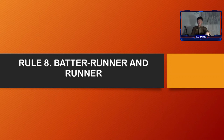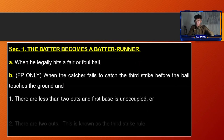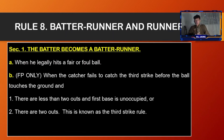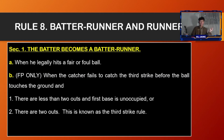Now let's proceed to rule number eight, batter runner and runner. Section number one, the batter becomes a batter-runner when he legally hits a fair or foul ball. The flex player only: when the catcher fails to catch the third strike before the ball touches the ground and there are less than two outs and first base is unoccupied, or there are two outs. This is known as the third strike rule.